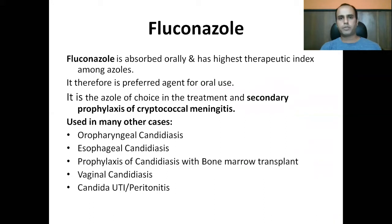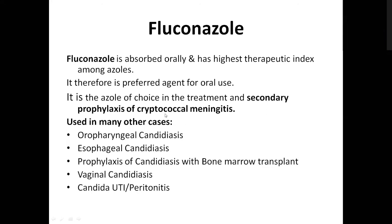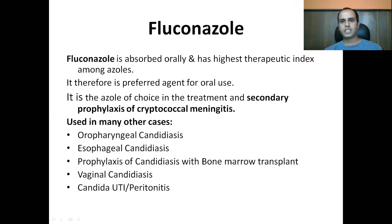Fluconazole is the prototype drug of the azole group. It is well absorbed and has the highest therapeutic effect among azoles for oral use. It is the azole of choice for treatment and secondary prophylaxis of cryptococcal meningitis, as its CNS penetration is the best among azoles. It is used for oropharyngeal candidiasis, esophageal candidiasis, prophylaxis of candidiasis in bone marrow transplant, general candidiasis, and Candida UTI and peritonitis.